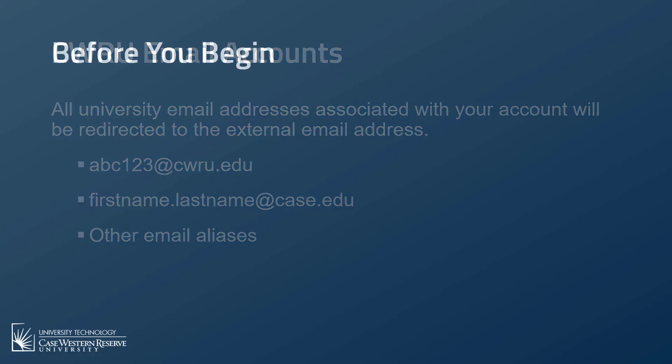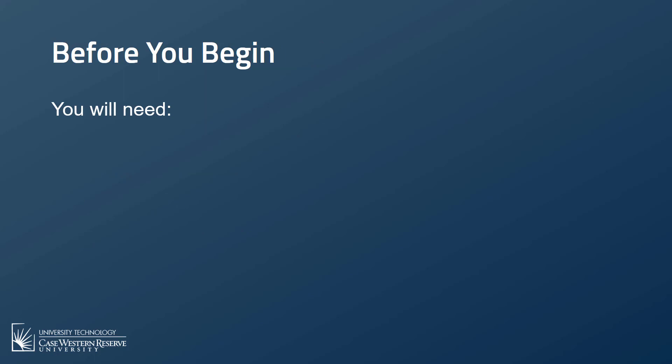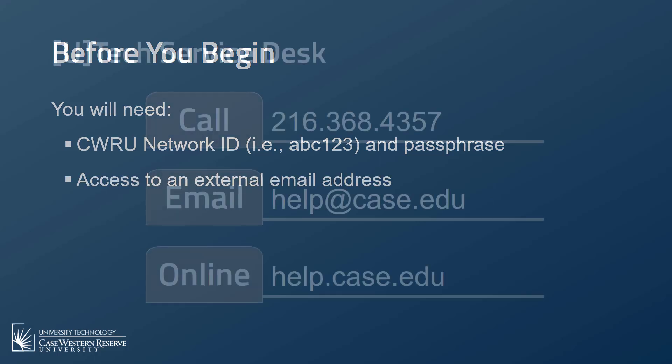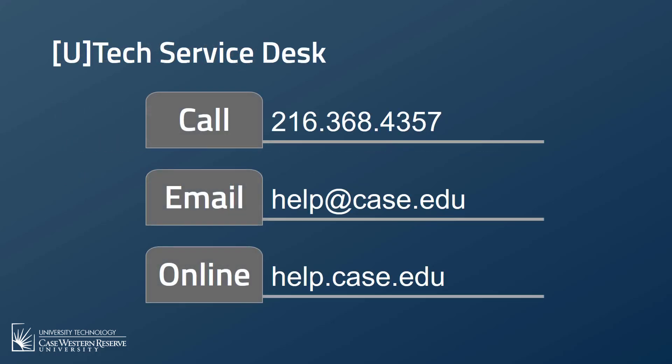Before you begin, you will need to know your CWRU network ID (i.e., abc123) and passphrase, and have access to check your external email address. If you need assistance remembering your network ID or passphrase, please contact the UTEC Service Desk at 216-368-4357, help@case.edu, or help.case.edu.